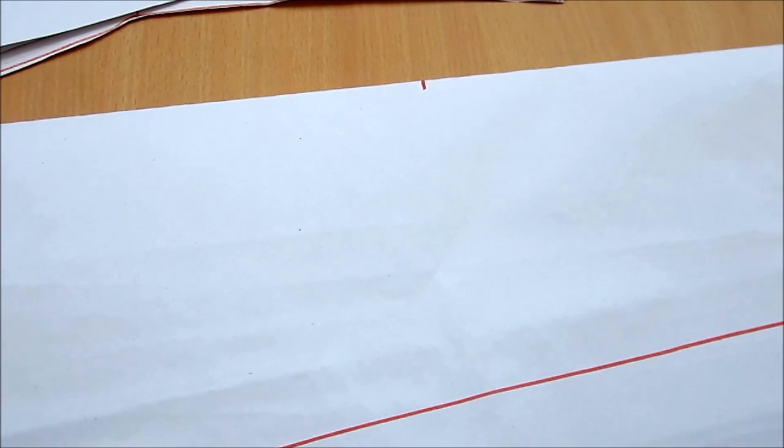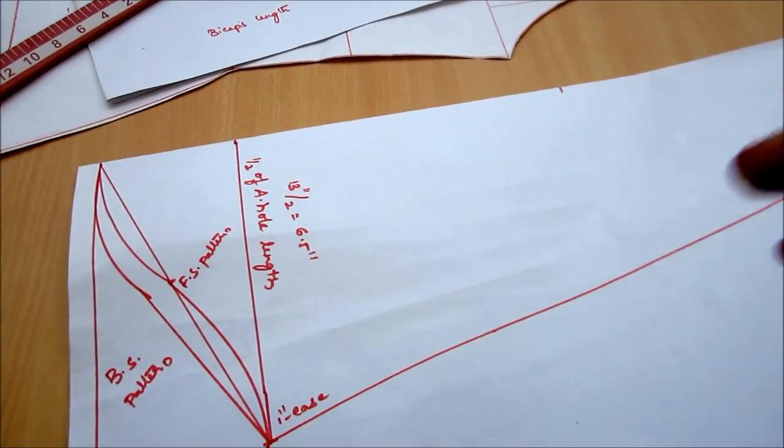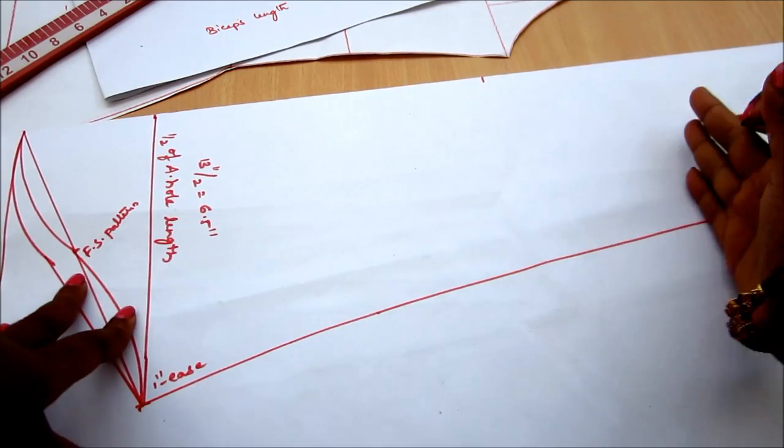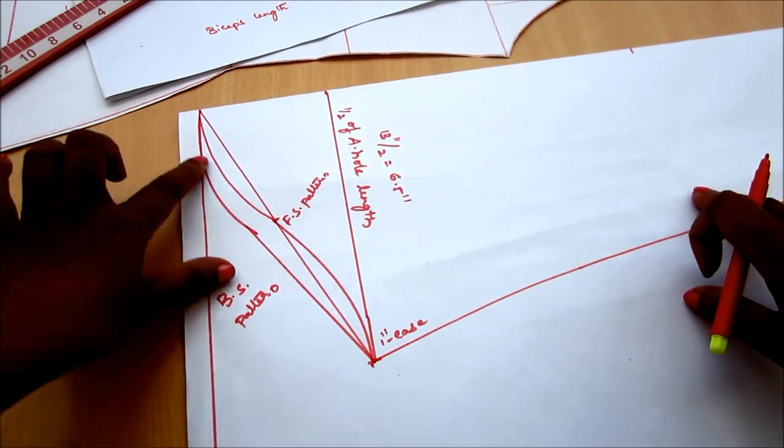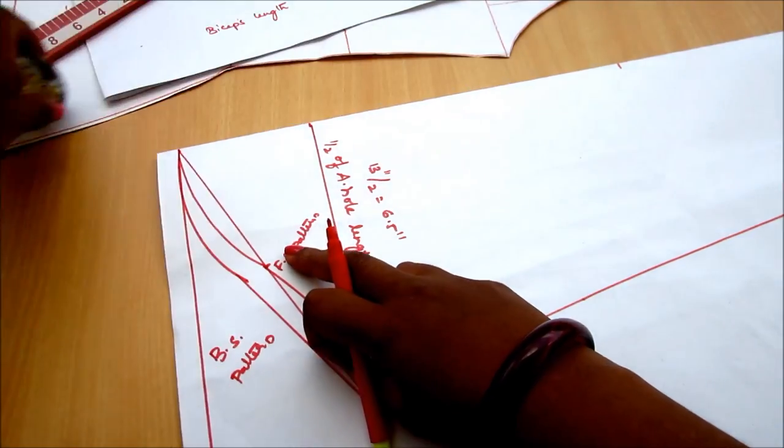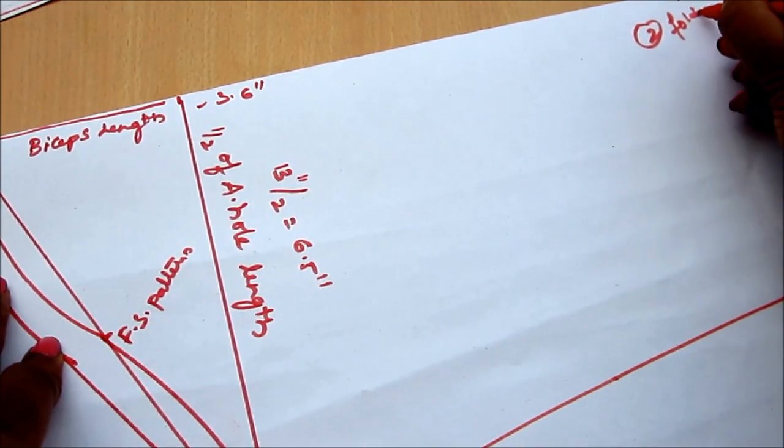So this is the way we will draft the pattern, and now I'll show you how to cut this. So this is the front and the back sleeve. Always you have to mark on the two folds, four layers.